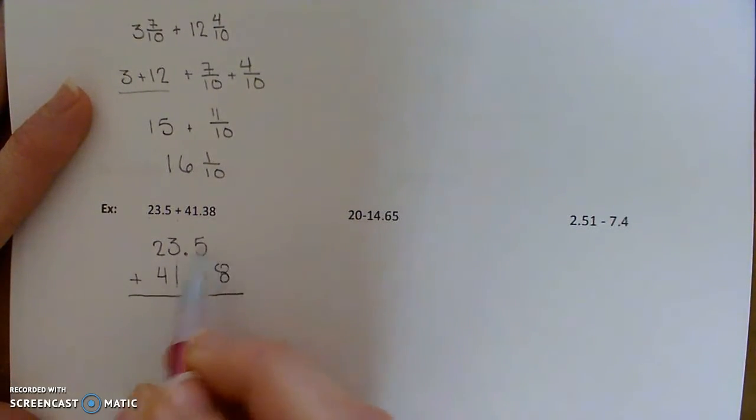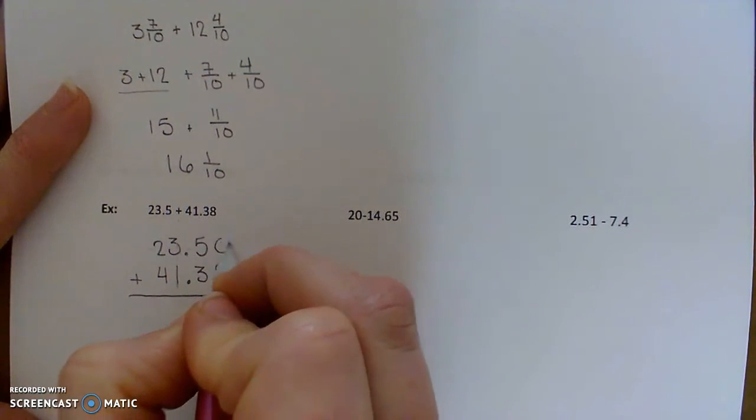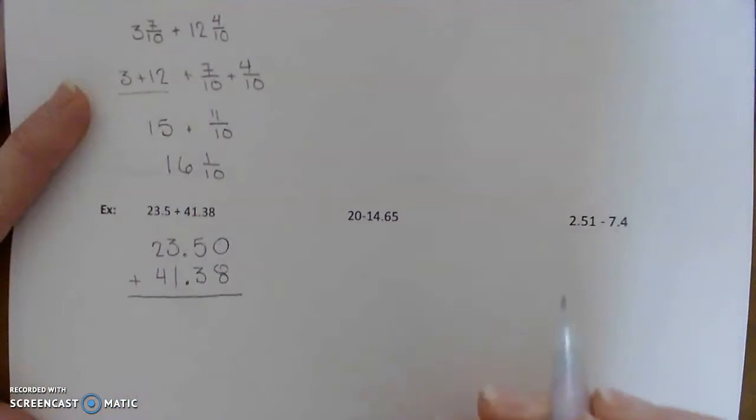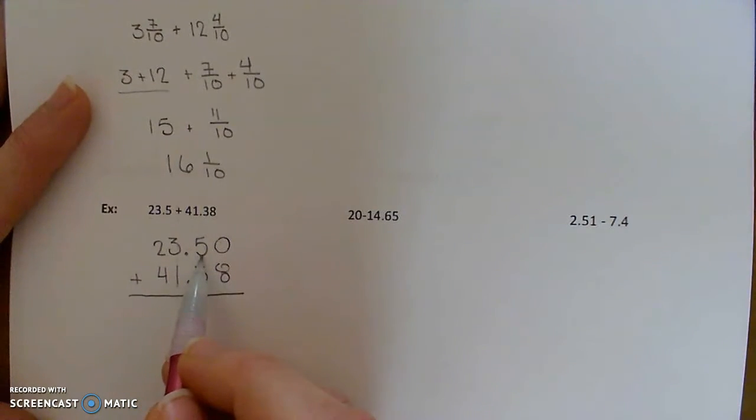There's an 8 in the hundredths place in this number, but in this number, there's nothing in the hundredths place, so you can put a zero there if you like. We talked about that last time, of appending a zero onto the end of your number, because 5 tenths is the same as 50 hundredths.